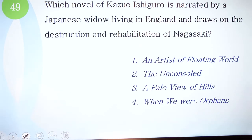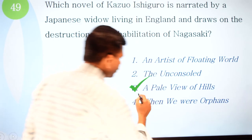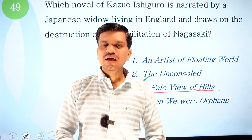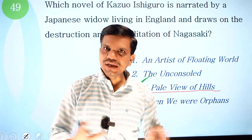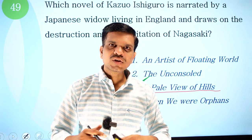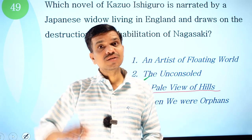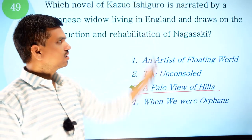Question 49: which novel by Kazuo Ishiguro is narrated by a Japanese widow living in England and draws on the destruction and rehabilitation of Nagasaki? Options: one, An Artist of the Floating World; two, The Unconsoled; three, A Pale View of Hills; four, When We Were Orphans. The correct option is A Pale View of Hills. You need to understand works and their writers to solve such questions, as the scope is very vast — not just English literature but literatures in English.